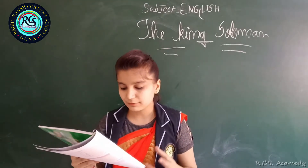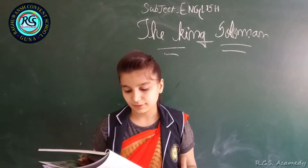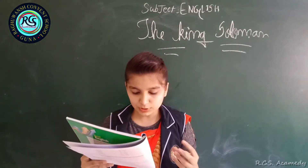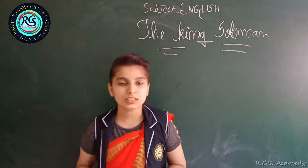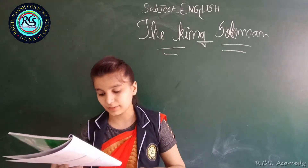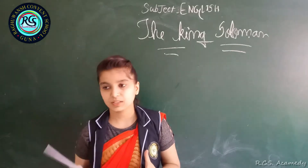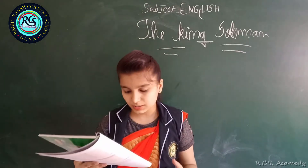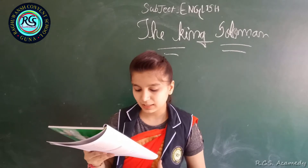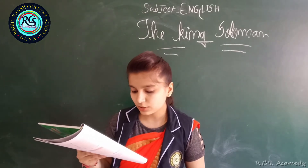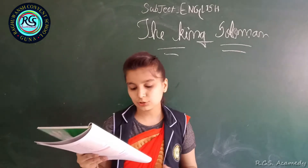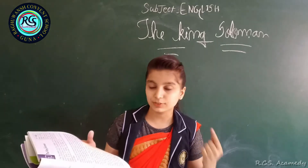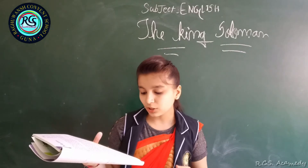The queen declared that one garland is real and one is artificial, and asked him to tell which is real and which is not. This question was very difficult. For a while, the king was quiet because he did not show his wisdom in answer. He did not speak even a single word. At this, the queen thought he was confused.